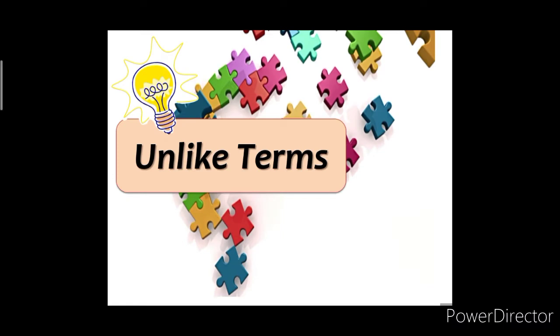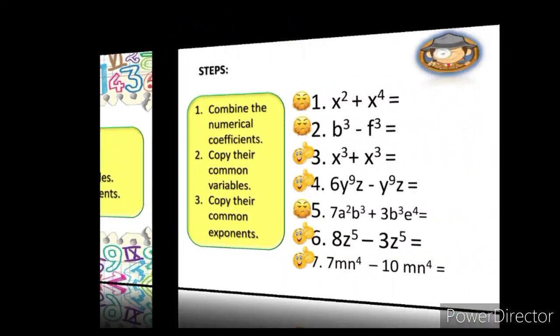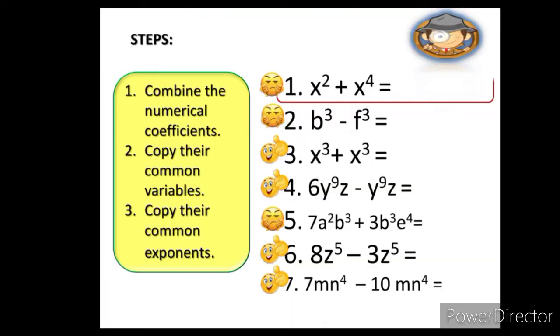What if they are unlike terms? All you have to do is to copy everything. But, there will be times that you need to consider the degree of the terms. Let us now answer the given examples. We can do it. Number 1. Since this item can't be combined, this is the final answer. But, the term with the highest exponent should be written first.